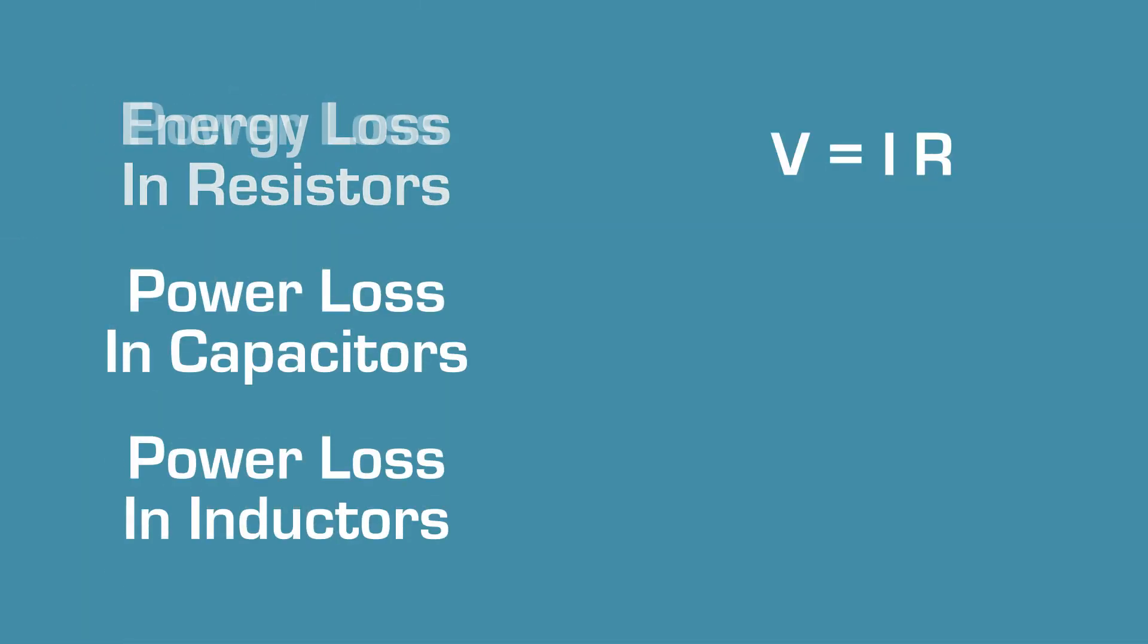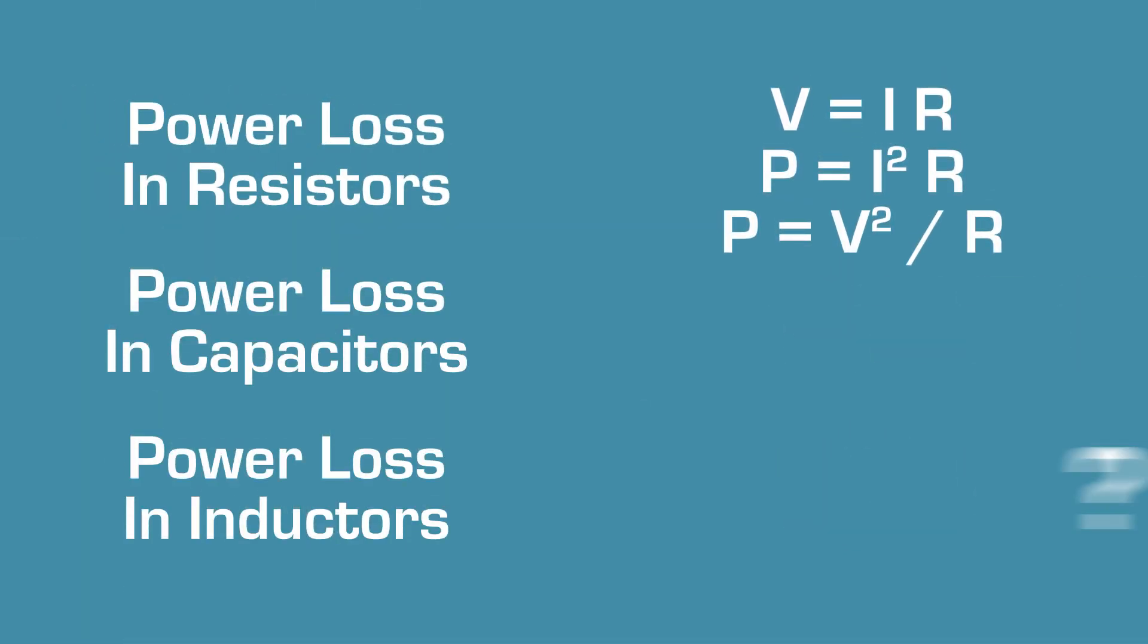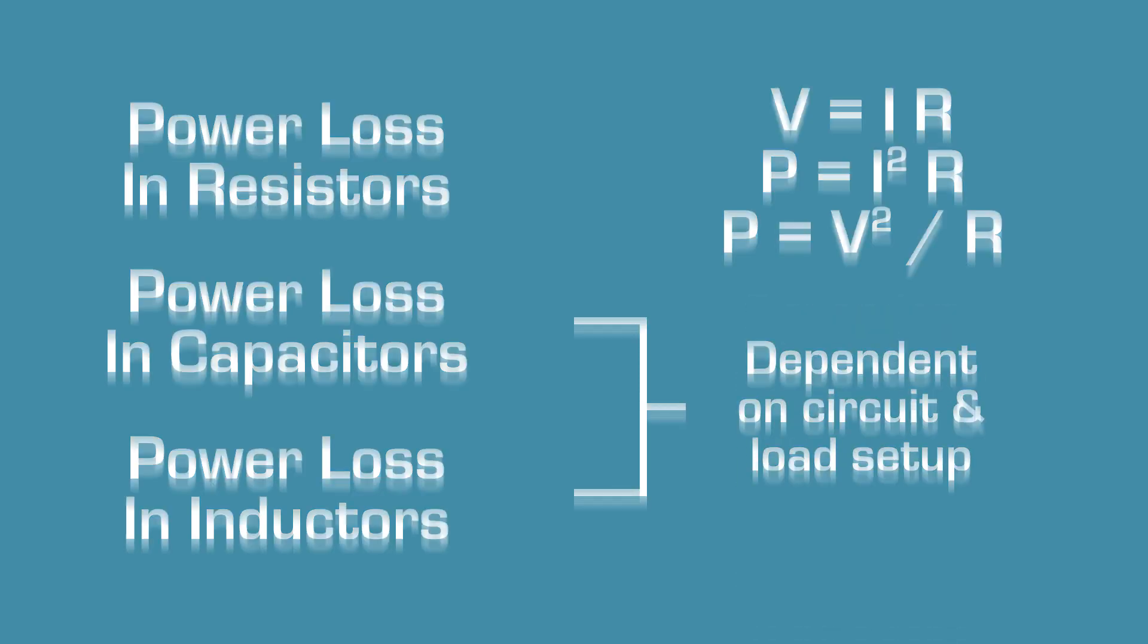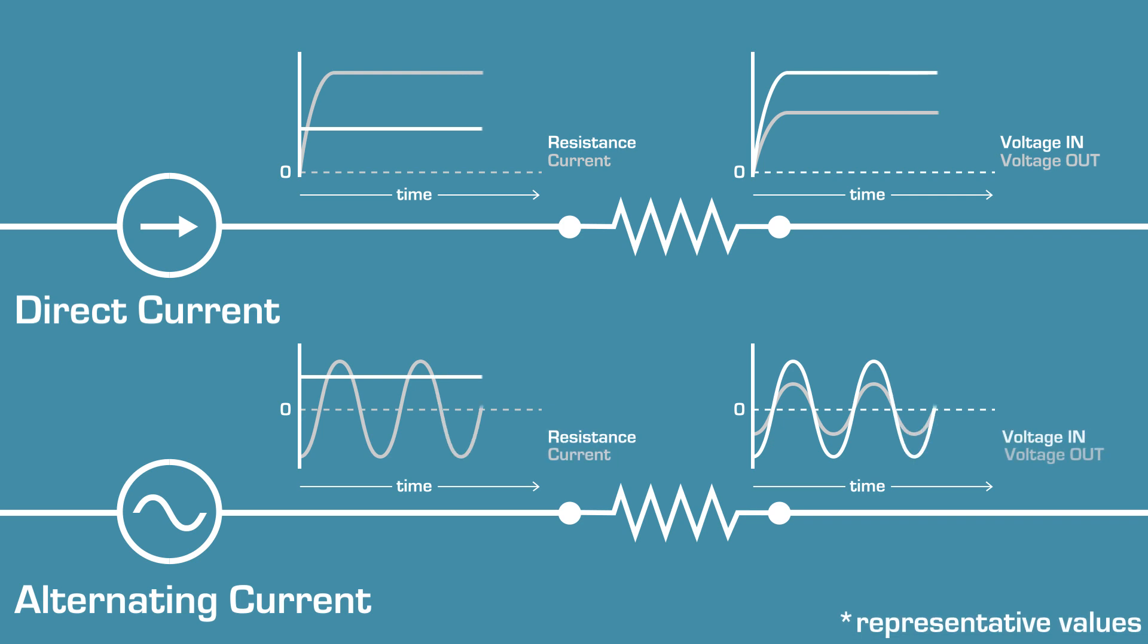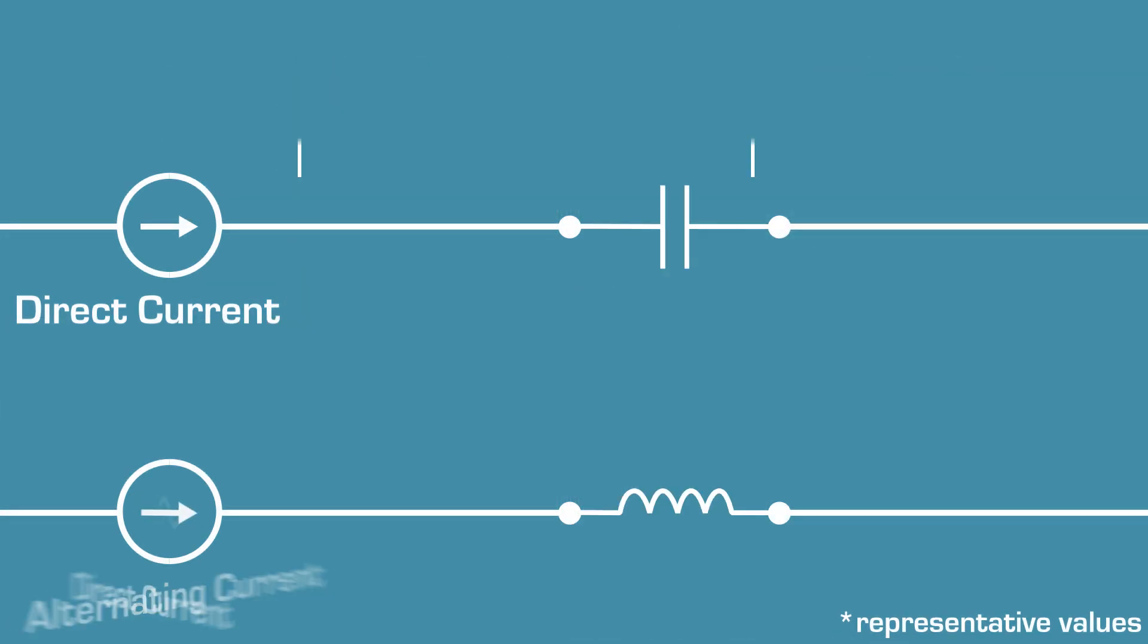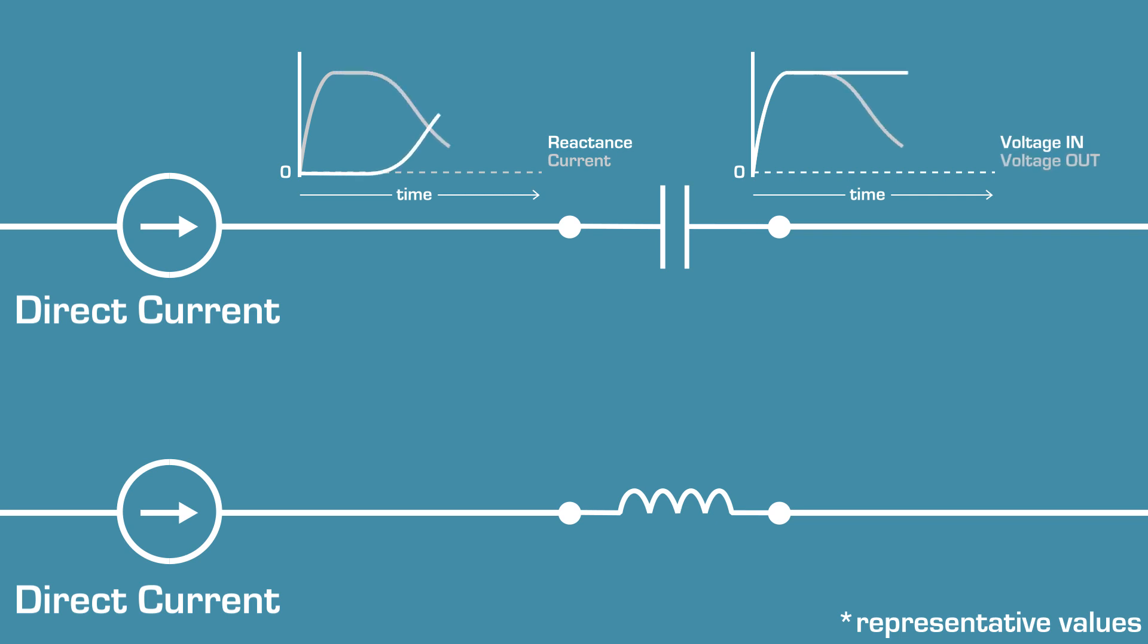Power loss through capacitors and inductors is more complicated because their behavior depends more on how the circuit is set up. Resistors usually act the same way for both AC and DC power, while capacitors and inductors don't. Capacitors briefly allow direct current to pass through them as they build their electrostatic field before building a high resistance to the flow.